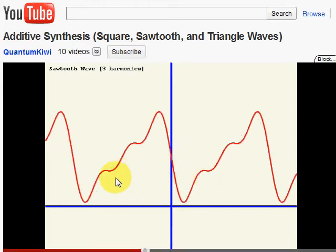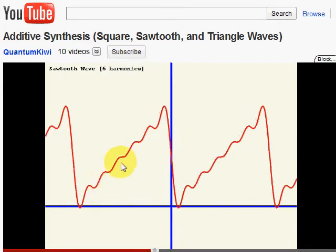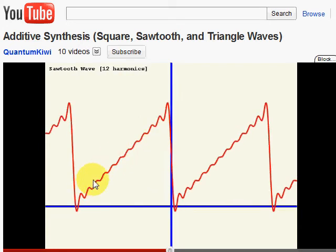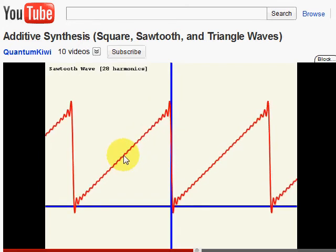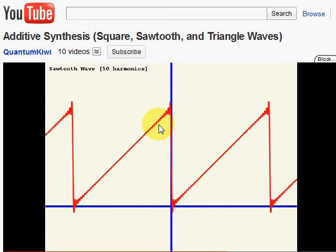For the ramp or the sawtooth wave, you need both odd and even harmonics. And once again, the ripples get ironed out as you add more and more harmonics. So here we'll need all harmonics, even and odd, as we use the 50 harmonics.